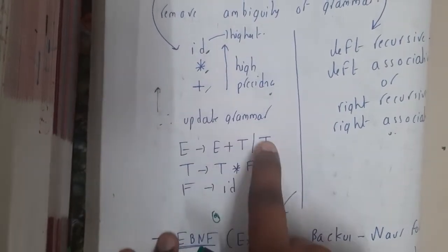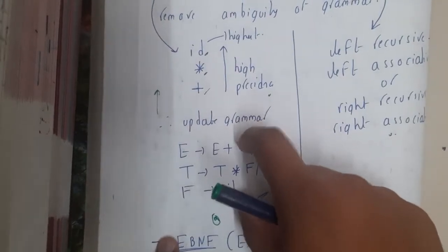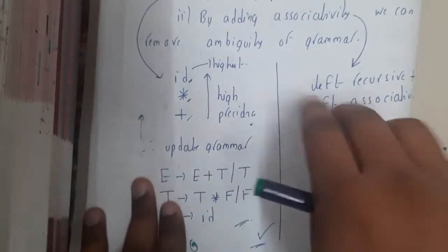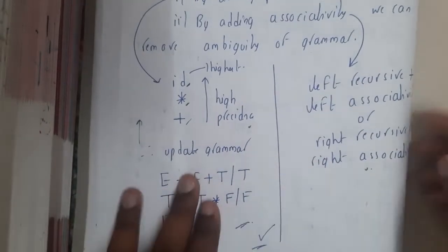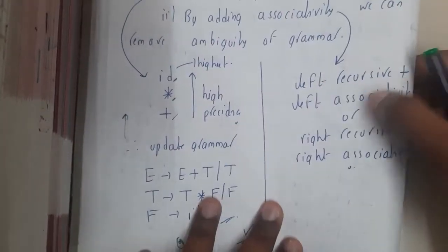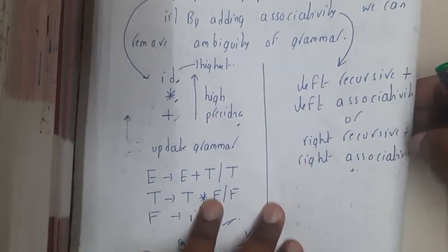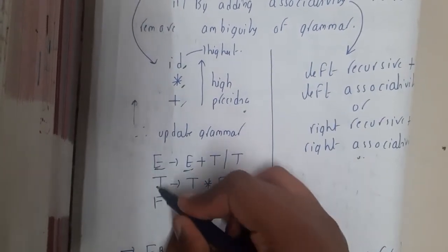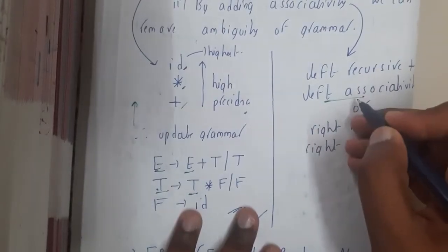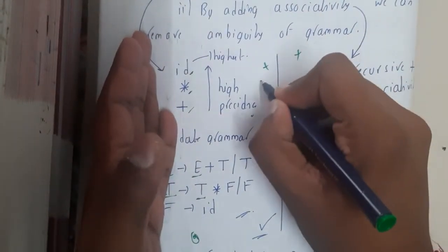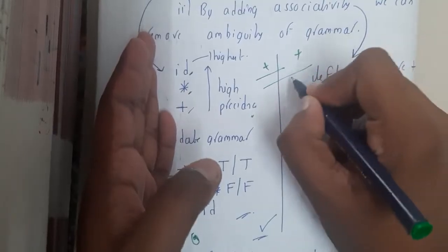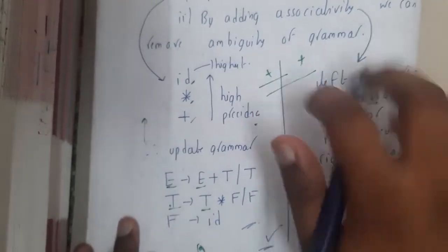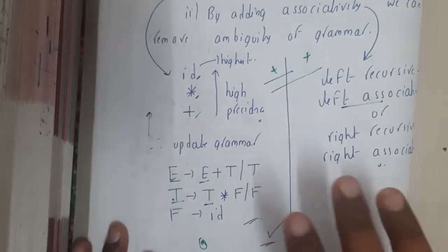Now the grammar has removed some part of ambiguity, but still there could be a chance of ambiguity. So that is the reason why you will be adding associativity, like left recursive plus left associative or right recursive plus right associative. If you observe here, we are having left recursion, so let us follow left associative. Whenever there is a clash between two operations, solve it from the left-hand side—that is nothing but left associative, left to right. So by using these two tricks you can remove the ambiguity in most of the simple grammars.